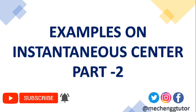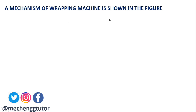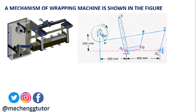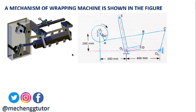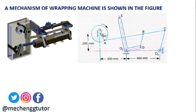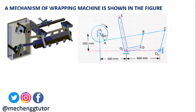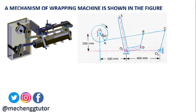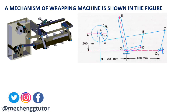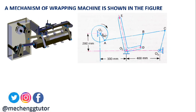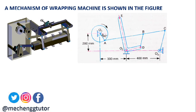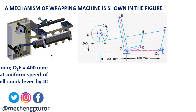Let's begin with the video lecture. We take an example of a mechanism of a wrapping machine as shown in this figure. We have the links and their sketches. This point is O1, so we have link O1A. This link is AC with point B and point C. This is point O3, then point D, with link BD. This point is O2. Points A and D are common points, and there is a bell crank here with point E.